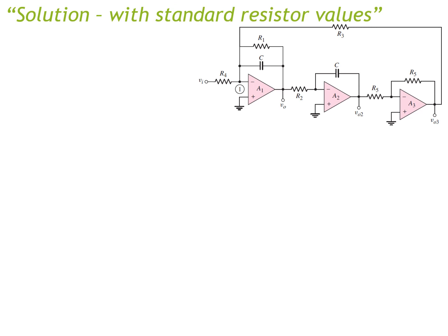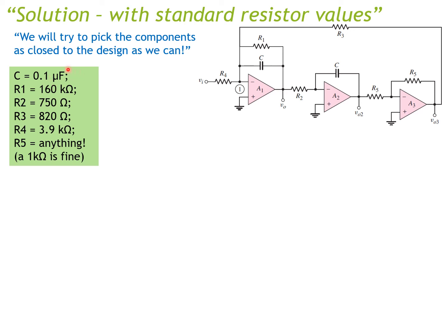We now have ideal calculated values. However, resistors come in standard sets, so we must choose the closest standard values. We set C = 0.1 microfarads (already standard) and R1 = 160 kilohms, which is close to the calculated 159 kilohms.